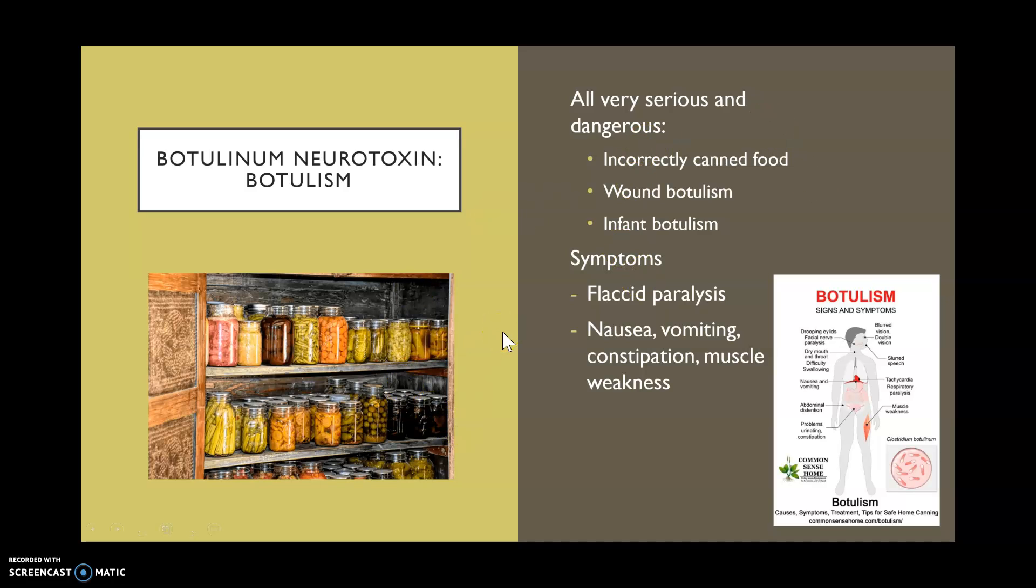The first symptoms are just the usual when you have a bacterial infection. It's going to be nausea, vomiting, diarrhea, and then comes the constipation and muscle weakness, and that is because of the mechanism that this neurotoxin takes on. Here we can see blurred vision, slurred speech, and this is because it does attack at the cellular muscle level.